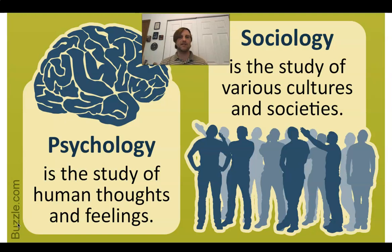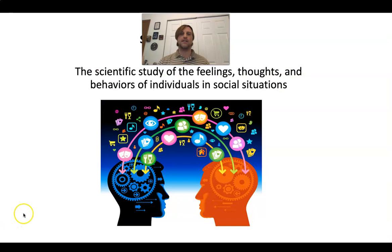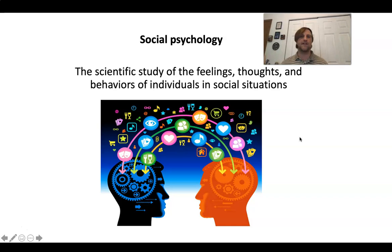We're jumping right into chapter one and talking about what is social psychology. In many ways, it's the merger of sociology, which looks at groups, institutions, organizations, cultures, and so on — and psychology, which is basically the study of human thoughts and feelings. Social psychology is the merger of these two, where we try to figure out how the social situation influences our behavior.